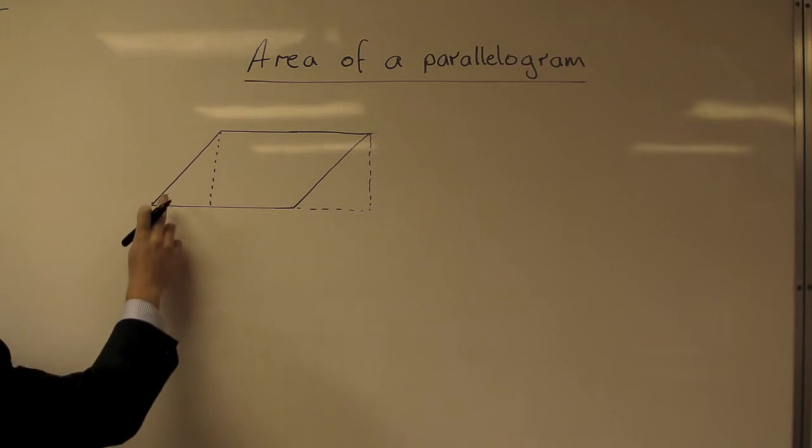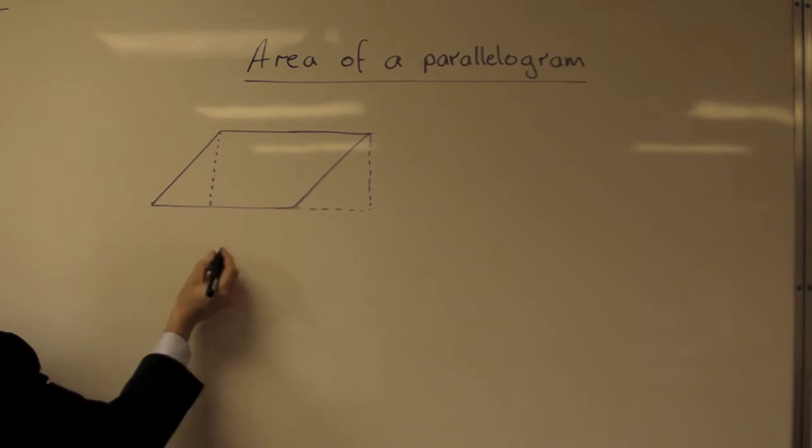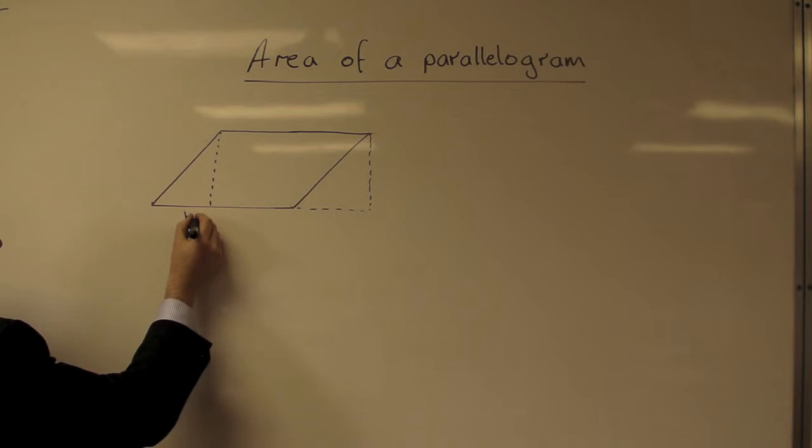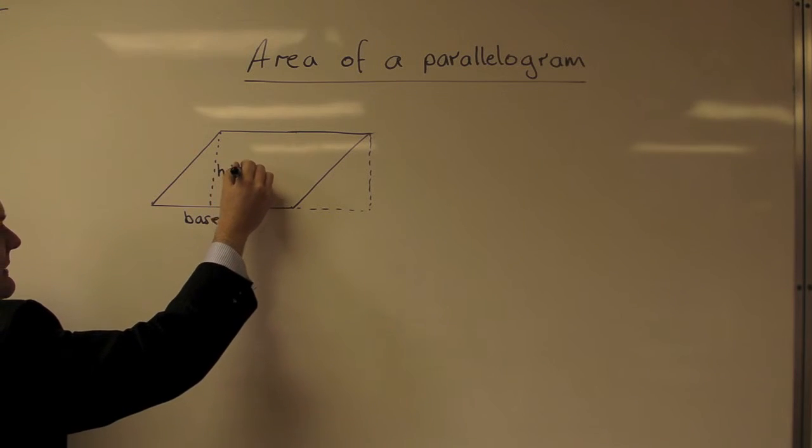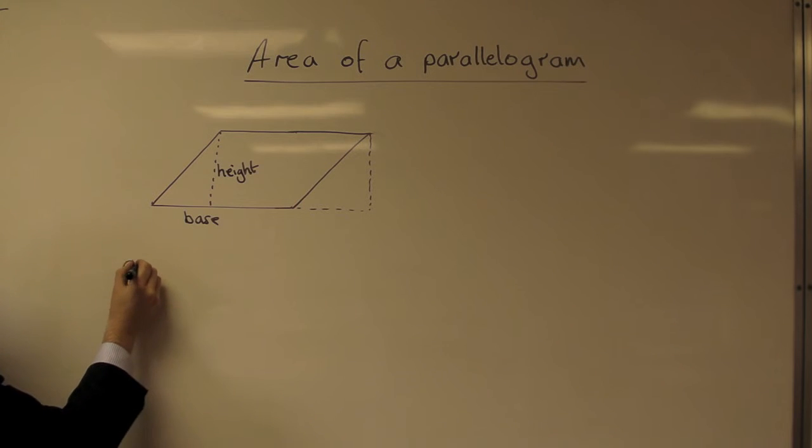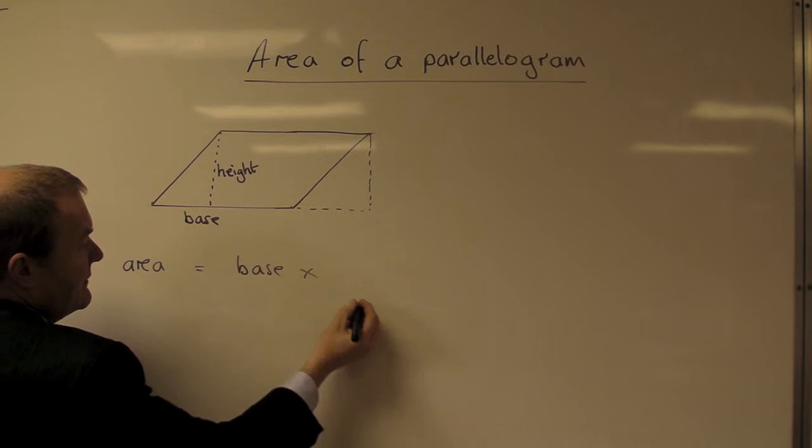So we can use the fact that it's a rectangle pushed over to remember our formula for the area. We need the base, and we need the perpendicular height. So the area of a parallelogram equals the base times the height.